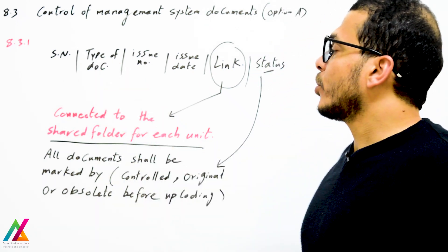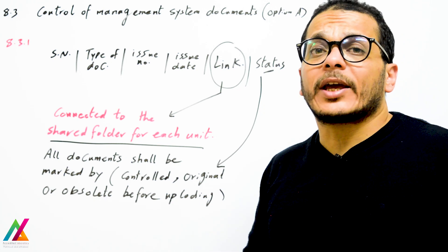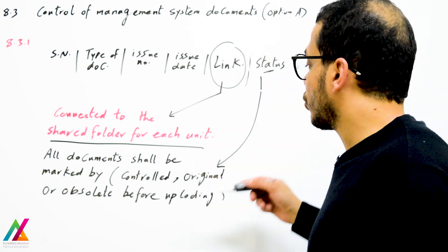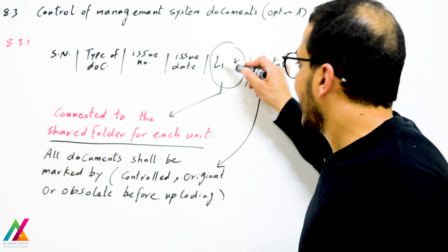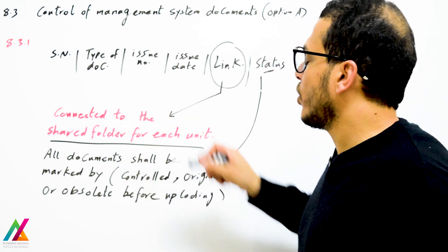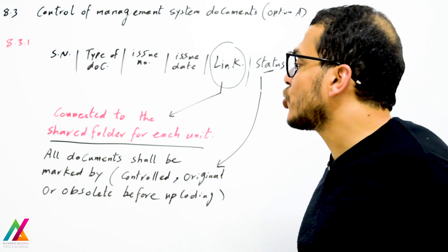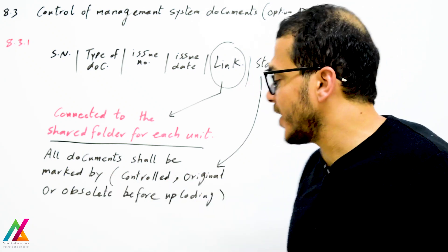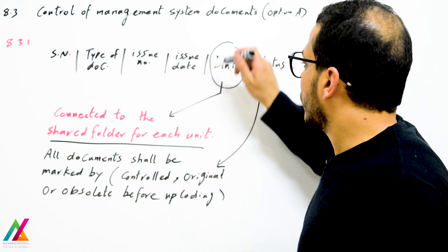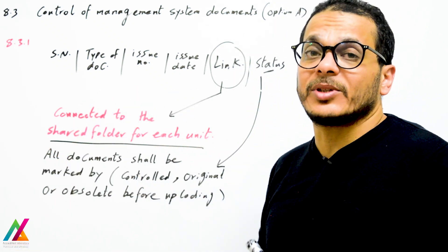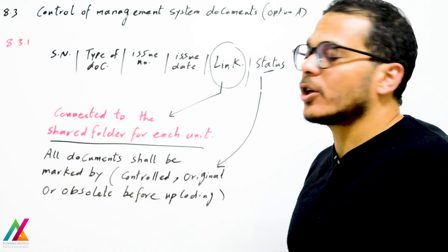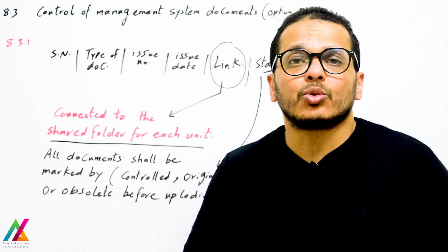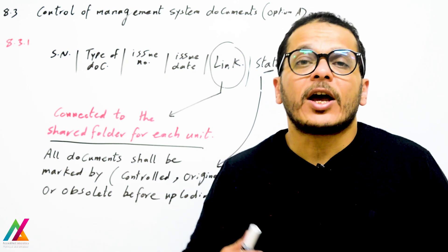To simplify, use a table with: serial number, type of document, name of form or procedure, issue number, issue date, status (controlled, original, or obsolete), and a hyperlink connected to the shared folder for each unit. All documents shall be marked as controlled, original, or obsolete before uploading to the shared folder, so when you press the link you go directly to the document and can print it.